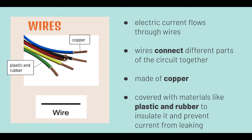Wires allow electric current to flow through them and connect different parts of the circuit together. They are often made of copper and covered with materials like plastic and rubber, which are insulators, to insulate the wire and prevent current from leaking.